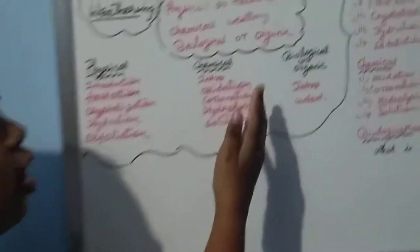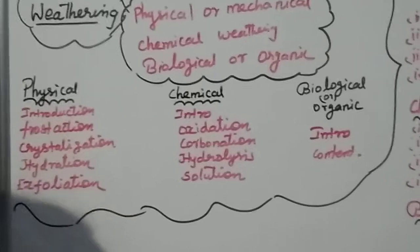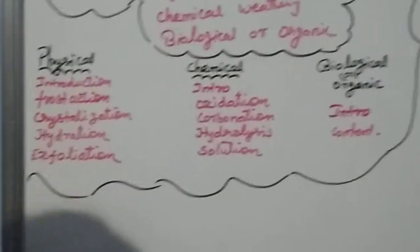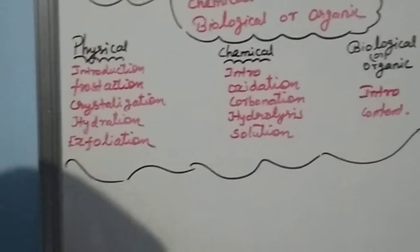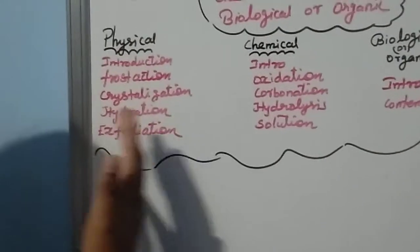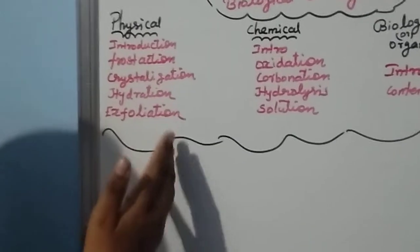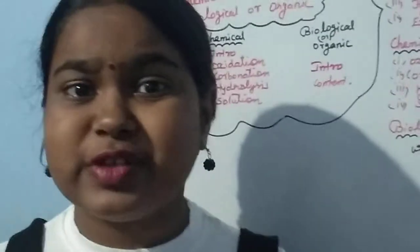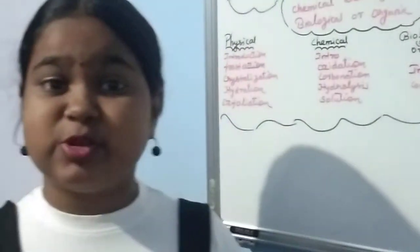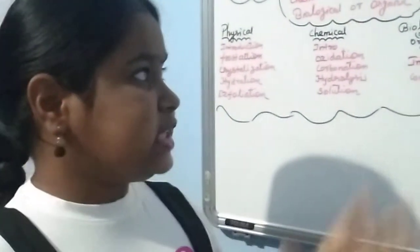Weathering has three types: physical and mechanical weathering, chemical weathering, and biological or organic weathering. Let's first see physical weathering. Rocks are physically disintegrated into small fragments. This usually happens due to extreme climates and changes in day and night temperatures — that is the main cause of physical weathering.